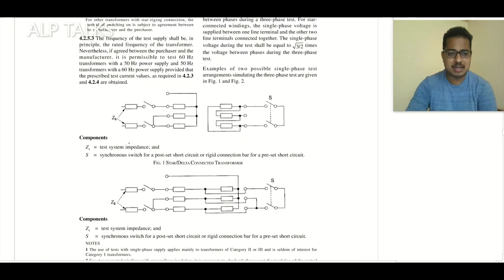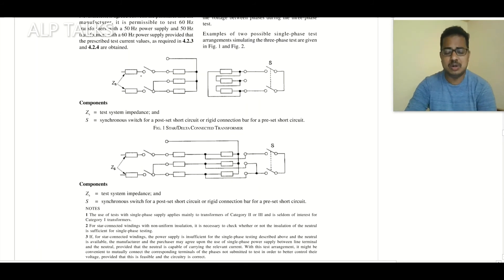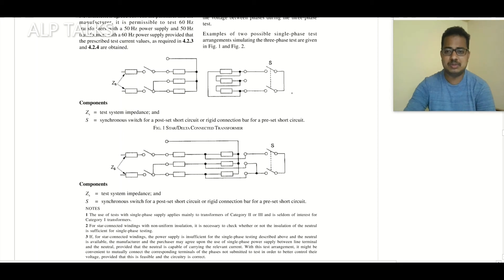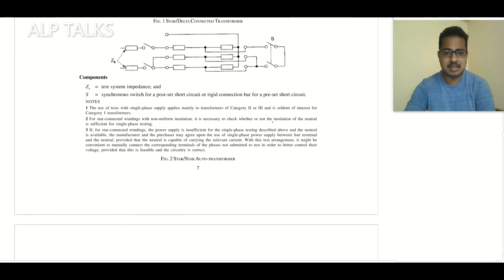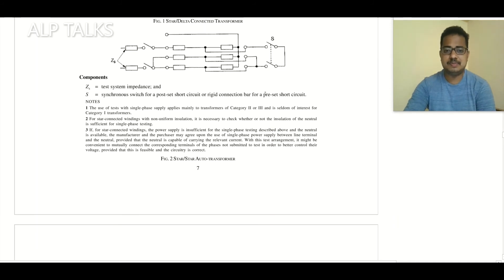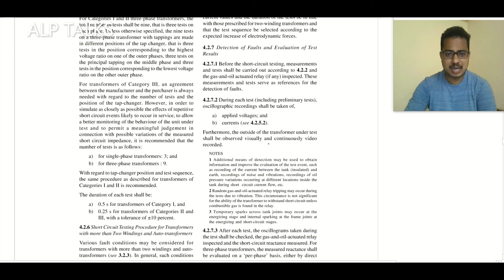The test setup is shown here — a star or delta connected transformer. For the short circuit test, the LV side is shorted and voltage is applied on the HV side, making it a preset short circuit condition.